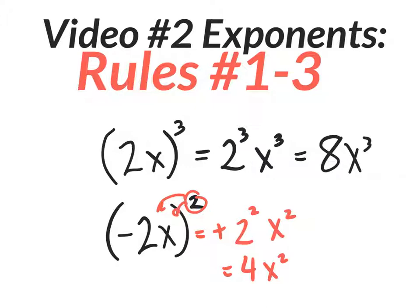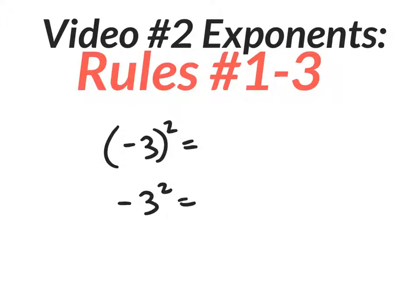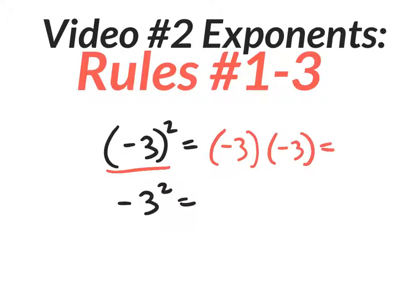Let's compare with something basic that could be confusing. When you have parentheses with a negative on the inside and a power on the outside, like negative three squared, it's really saying negative three times negative three. The parentheses make the base include the negative sign. There's no parentheses in the other case, so that negative does not belong to the base. On the top example — negative three inside parentheses, squared — you write the base out twice: negative three times negative three is positive nine.